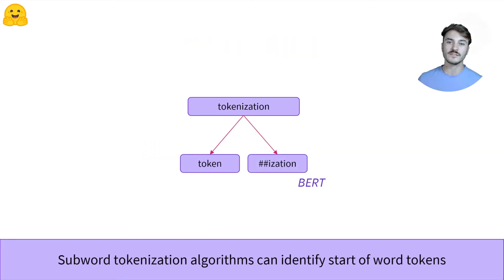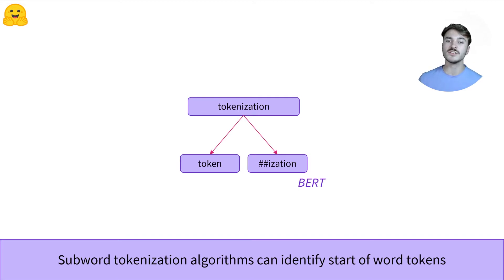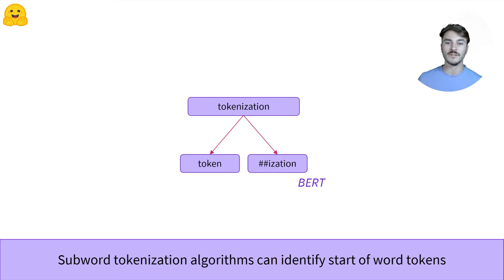Subword-based tokenizers generally have a way to identify which tokens are a start of word and which tokens complete start of words. So here, "token" is the start of a word, and "##ization" is a completion of a word. The ## prefix indicates that "ization" is part of a word rather than the beginning of it. The ## comes from the BERT tokenizer, based on the WordPiece algorithm.